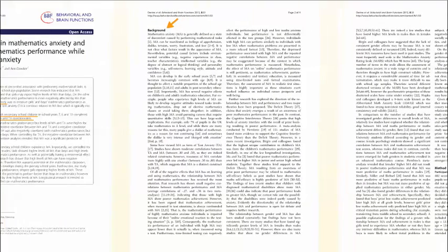Even though the sections included in a research article are the same, you may see different section headings. This is especially true of the literature review portion, which may be called background, introduction, or have no heading at all. The initial review of the literature is actually secondary, but it is included in primary articles because it creates the context for the research study.